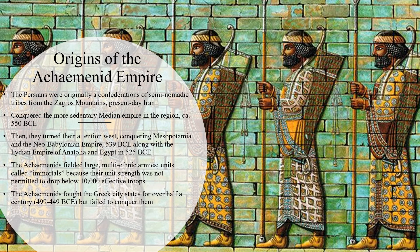Let's briefly talk about the origins of the Achaemenid Empire. The Persians — the ruling class of the Achaemenid Empire — were originally confederations of semi-nomadic tribes from the Zagros Mountains in what is now Iran. They conquered the more sedentary Median Empire in the region about 550 BCE, and then turned their attention to the west, conquering Mesopotamia and the Neo-Babylonian Empire in 539 BCE, along with the Lydian Empire of Anatolia — modern-day Turkey.